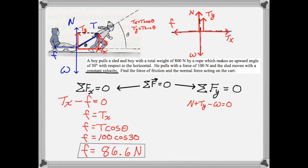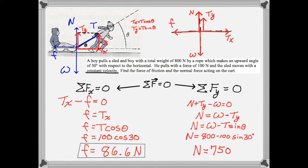Vertically, we have both the normal force and the vertical component of tension as positive, and the weight vector as negative. To find the normal force, we'll use the vertical equation and solve for n. Then we'll use the trigonometric relation to substitute t sine theta for ty, plug in the numbers, and calculate. We find that the normal force is equal to 750 newtons. As expected, the normal force is less than it would have been if the rope had been horizontal.